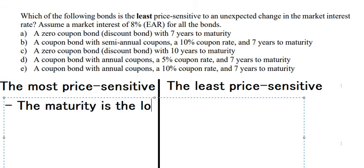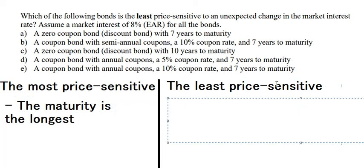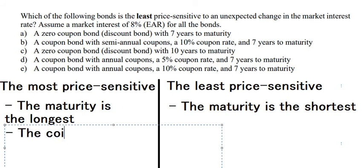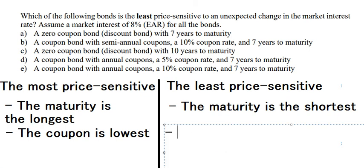For the most rate sensitive, the maturity is the longest. For the least rate sensitive, the maturity is the shortest. The next criterion is the coupon rate. For the most rate sensitive, the coupon should be the lowest. For the least rate sensitive, the coupon is the highest.